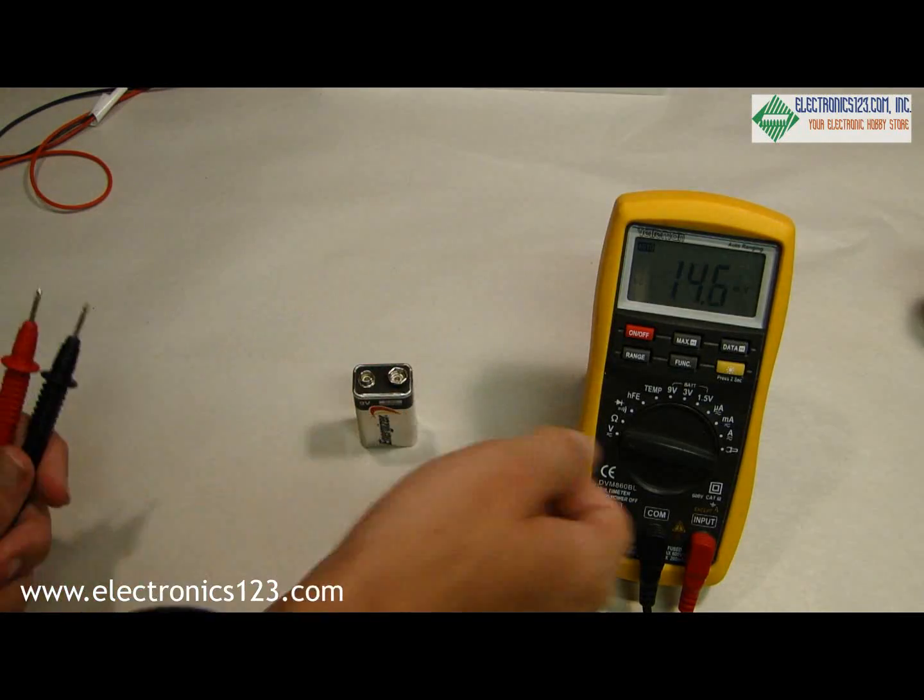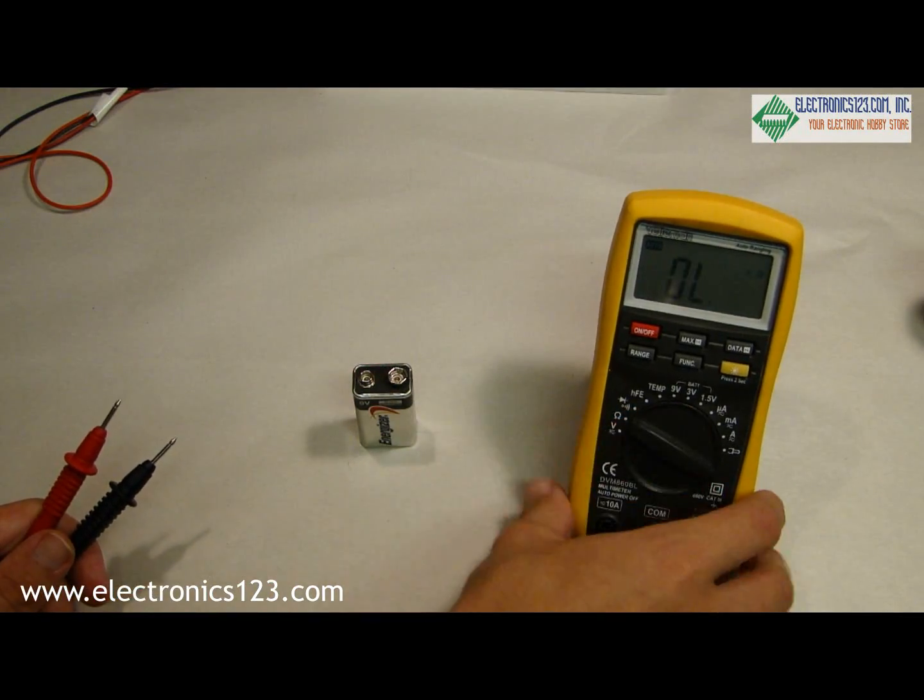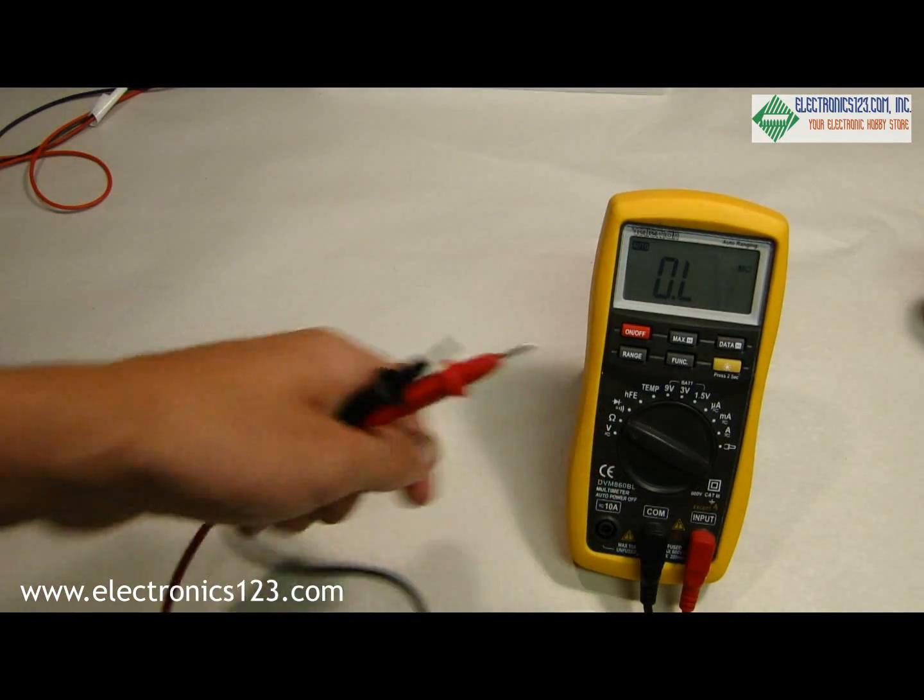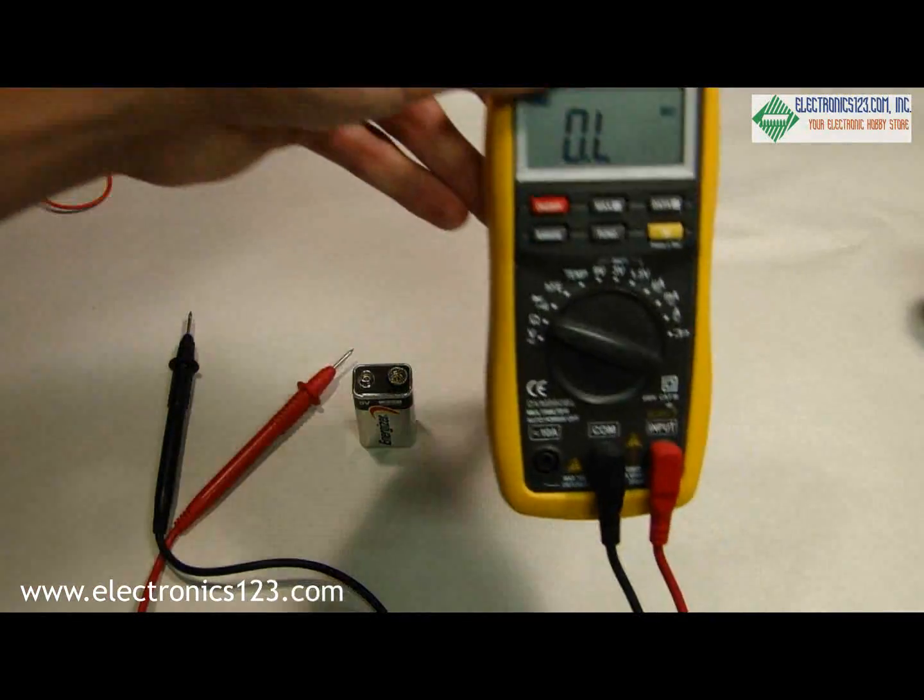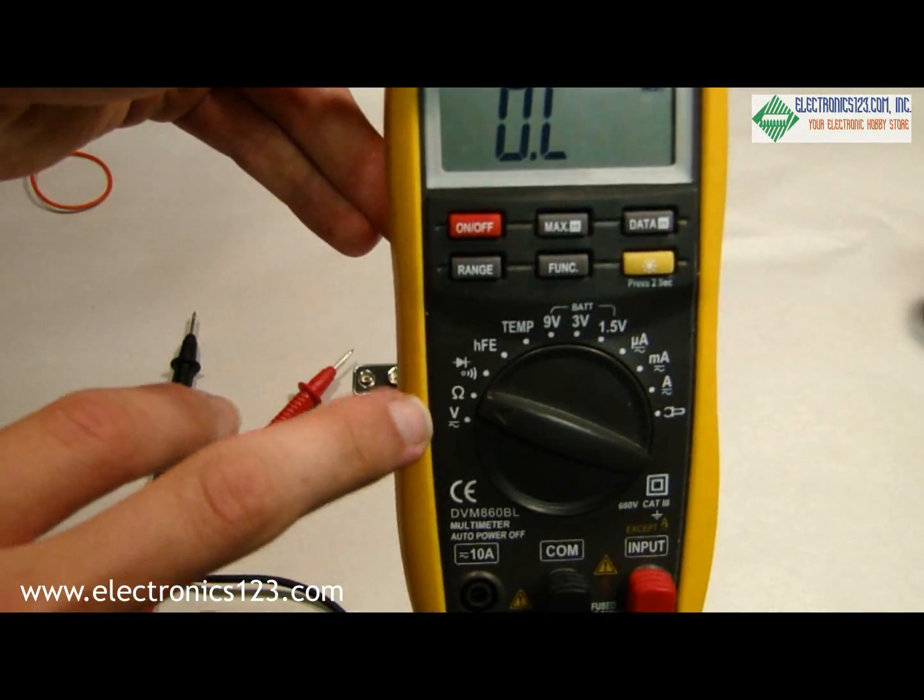Another common use is to check resistance. To do this we select ohms on the turn dial. You can see that ohm symbol here.